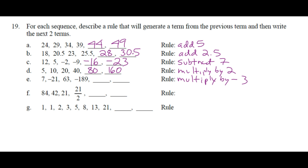Now we might actually need calculators. So negative 189 times negative 3 is? Is it negative or is it positive? Positive. 567. 84, 42, 21, 21 over 2. Rule? Divide by 2. You know another way to express that? Multiply by a half. Why would I do that, right?